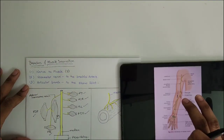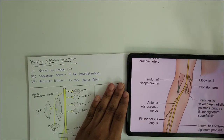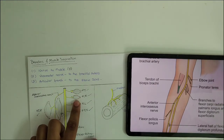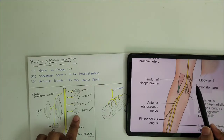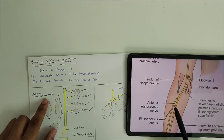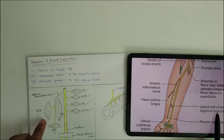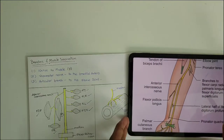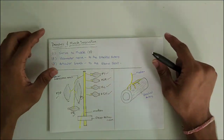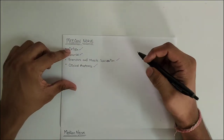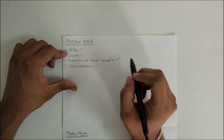Visualizing with the Vishram Singh schematic diagram: this shows pronator teres, flexor carpi radialis, palmaris longus, and flexor digitorum superficialis supplied directly by the median nerve. Then the median nerve gives off the anterior interosseous nerve, which innervates flexor pollicis longus, flexor digitorum profundus, and pronator quadratus. Drawing this schematic diagram in your exam will surely earn you higher marks than your companions.